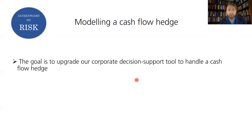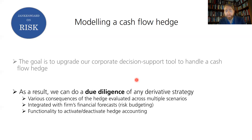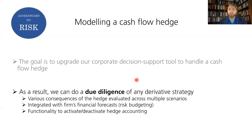What we're here to do is upgrade the corporate decision support in our risk model to handle a cash flow hedge, so that we can understand our financials better, evaluate the hedging decision better, and make a more informed decision on whether the benefits of hedge accounting outweigh the costs — which we know are substantial. We want to be able to see beforehand what kind of financial forecasts we're looking at under hedge accounting versus traditional fair value accounting. This is within risk budgeting, where risk is connected to strategic goals and ensuring the investment program is funded and the strategy optimally executed.